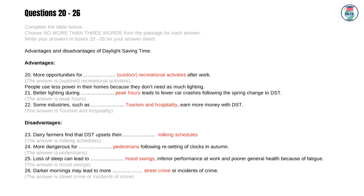Complete the table below. Choose no more than three words from the passage for each answer. Advantages and disadvantages of daylight saving time. Advantages: 20 — More opportunities for outdoor recreational activities after work. The answer is: outdoor recreational activities.